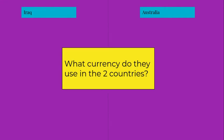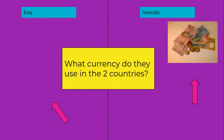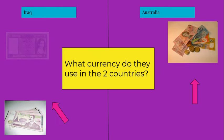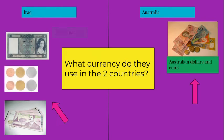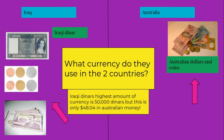For economics we have chosen to find out what kind of currency both of the countries use. At first we thought that they used the same currency as Australia which are dollars and cents, but then we found out that they have a different type of currency called Iraqi dinar. It turns out that they have a $50,000 note but in Australia it's only worth $48.04.